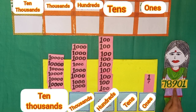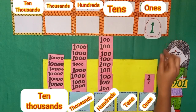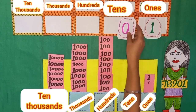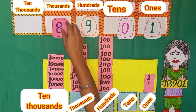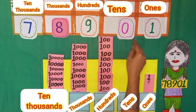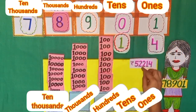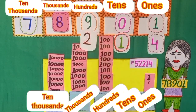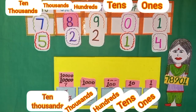Aman's mom has 78,901 rupees. Starting from ones, we have 1 note of 1 rupee means 1 one, and no currency on tens means 0 tens, and 9 notes of 100 rupees means 900, and 8 notes of 1,000 means 8,000, and 7 notes of 10,000 means 78,901 rupees. She spent 4 notes of 1s, 1 note of 10s, 2 notes of 100s, 2 notes of 1,000s, and 5 notes of 10,000 — that is 52,214 rupees.